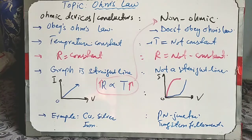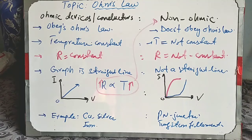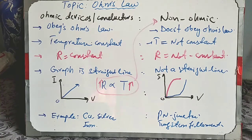One more point: if we change the polarity of the potential applied — swap plus to minus and minus to plus — even then there is no effect on resistance. So resistance is independent of applied potential in both magnitude and direction (polarity). Current value also does not affect resistance. Resistance only depends on physical parameters and the nature of the material.